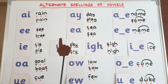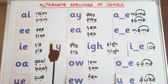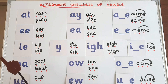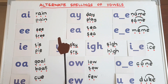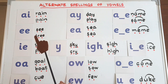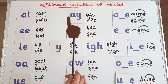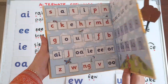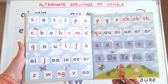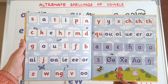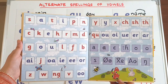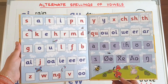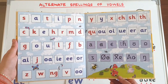Hi there, welcome to Homeschooling with Hira. Hope everyone is doing well. In today's video I'm going to tell you about the alternative spellings in Jolly Phonics. After teaching these 42 sounds, we teach children about the alternative spellings of vowels and some other sounds.